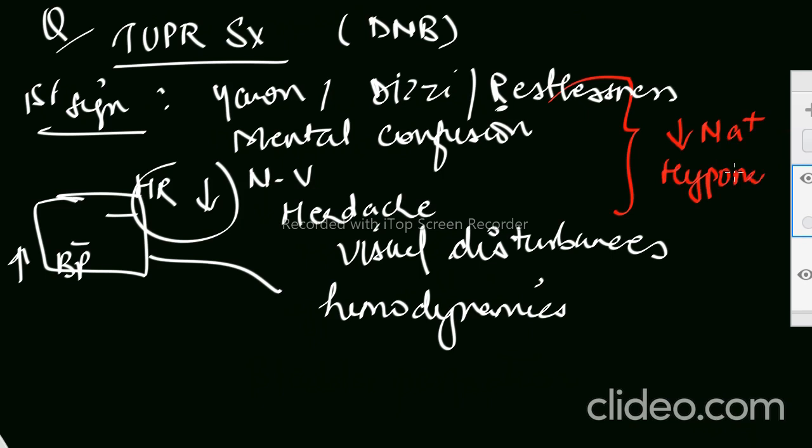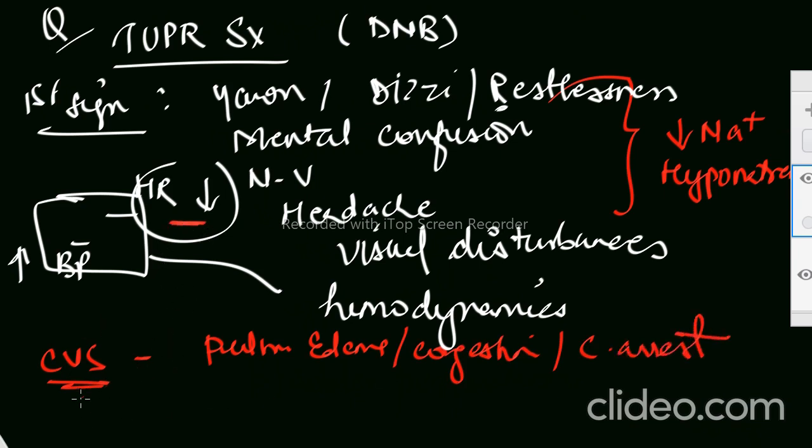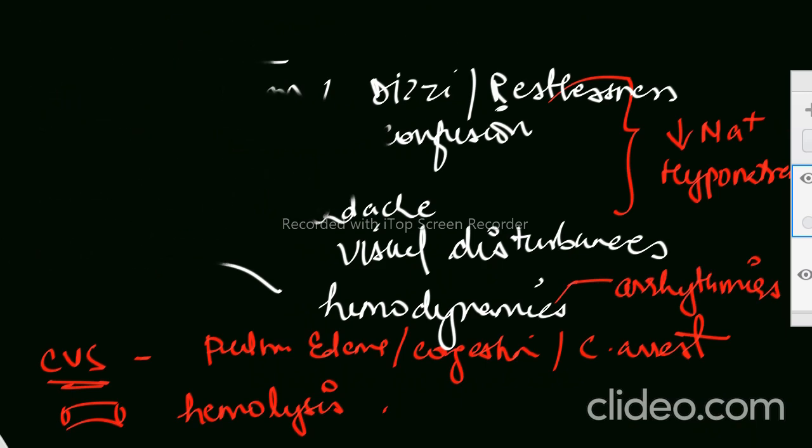There is heart rate, there is blood pressure. So you will see that the heart rate is going down, there is unexplained hypertension, and refractory bradycardia. All these will be occurring because of one reason and that is low sodium, what we call it hyponatremia. Another system, basically CVS. In CVS, patient might get pulmonary edema or congestion, or cardiac arrest. Anything can happen, we can see from here also. In blood vessels, hemolysis can occur. Arrhythmias can occur. All these things are signs and symptoms related with the TURP syndrome.